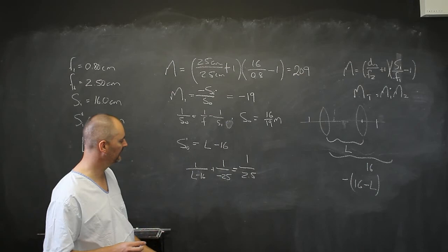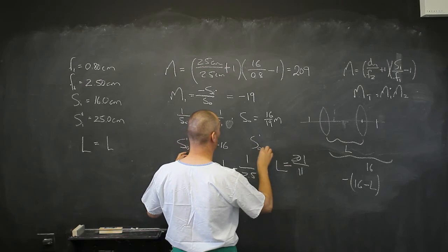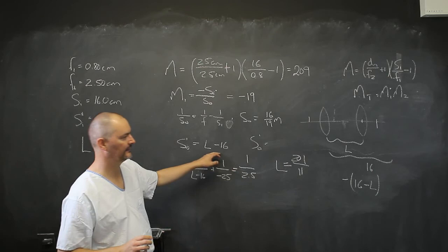So my object in reality and my image on the same side, that's going to be a virtual image, and that's going to be negative 25. That gives me an L value of 21 over 11, if you do that. And so, for instance, then I can work out my S0.